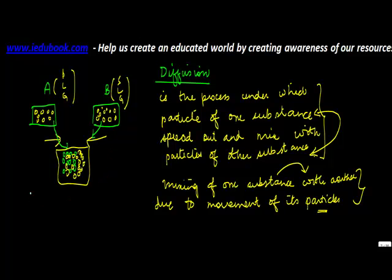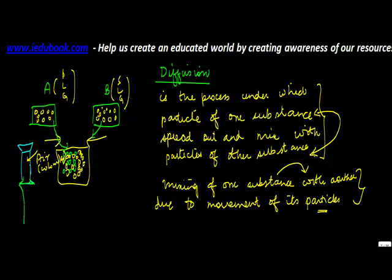So let us take an example. Let's say you have a flask which contains air. You know that air is colorless. Let's take another flask — this flask is an inverted one, put upside down, but it contains air. Let's take another flask containing bromine gas. The color of bromine is shown as green in this diagram.